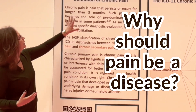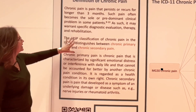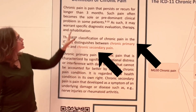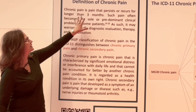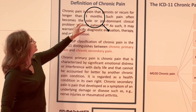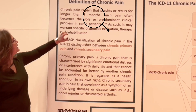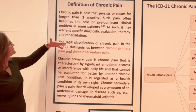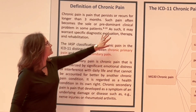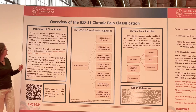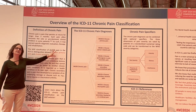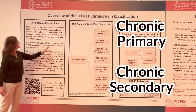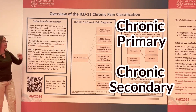But why should pain be a disease? Because chronic pain can be primary and secondary. Chronic pain, first of all, is pain that persists or recurs for longer than three months. It is often the sole predominant problem in some patients, and it needs a diagnostic evaluation, therapy, and rehabilitation. The ICD-11 distinguishes between chronic primary and chronic secondary pain.